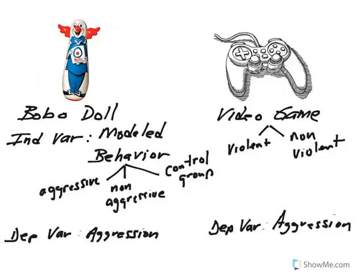For the Bobo doll experiment the behavior is broken into three categories: aggressive, non-aggressive, and the control group. Our job is to determine if the amount of aggression demonstrated by participants in each category differs. For the video games experiment the independent variable branches off into two levels or conditions: a violent video game and a non-violent video game. What we want to determine is if the independent variable has an effect on the dependent variable, which in this example is aggression.